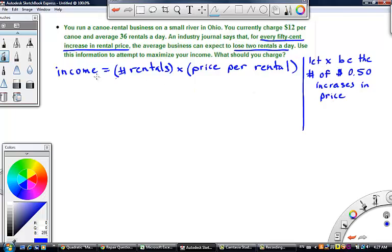Okay, so what we're going to do is we're going to call this income I just to reduce some of our writing. And the number of rentals, well currently we're renting out 36 rentals each day. So we can say that the number of rentals is going to be 36, and every time we increase the price well we're going to lose two rentals. So it's going to be minus 2x.